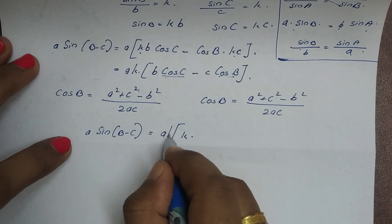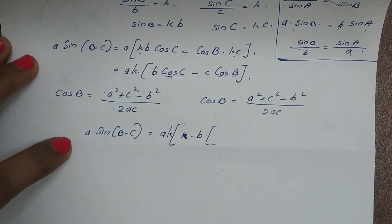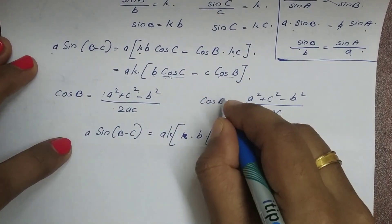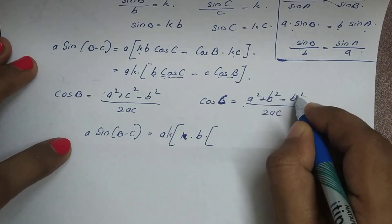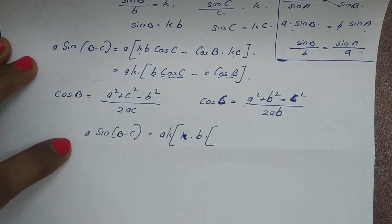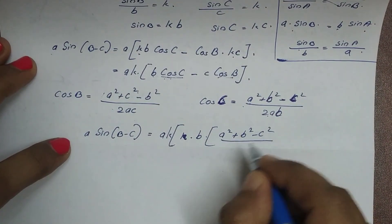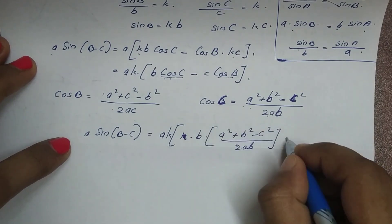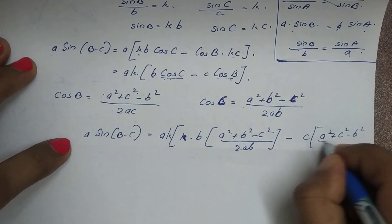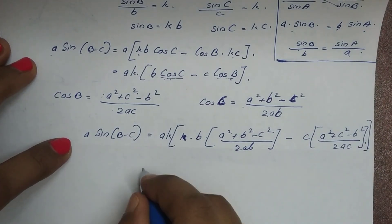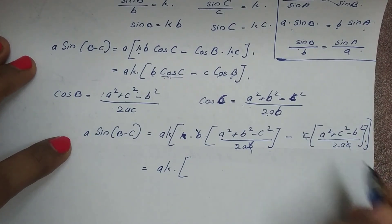cos C = (a² + b² − c²) / (2ab), and cos B = (a² + c² − b²) / (2ac). Substituting these, we get sin(B−C) = k times [b·(a² + b² − c²)/(2ab) minus c·(a² + c² − b²)/(2ac)]. Here b cancels with 2ab and c cancels with 2ac, leaving denominator 2a.